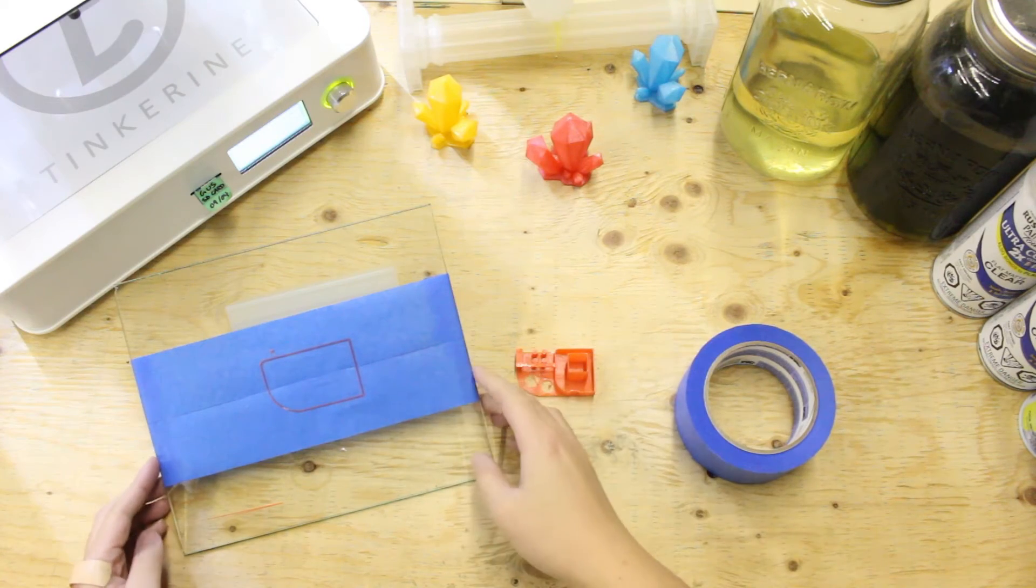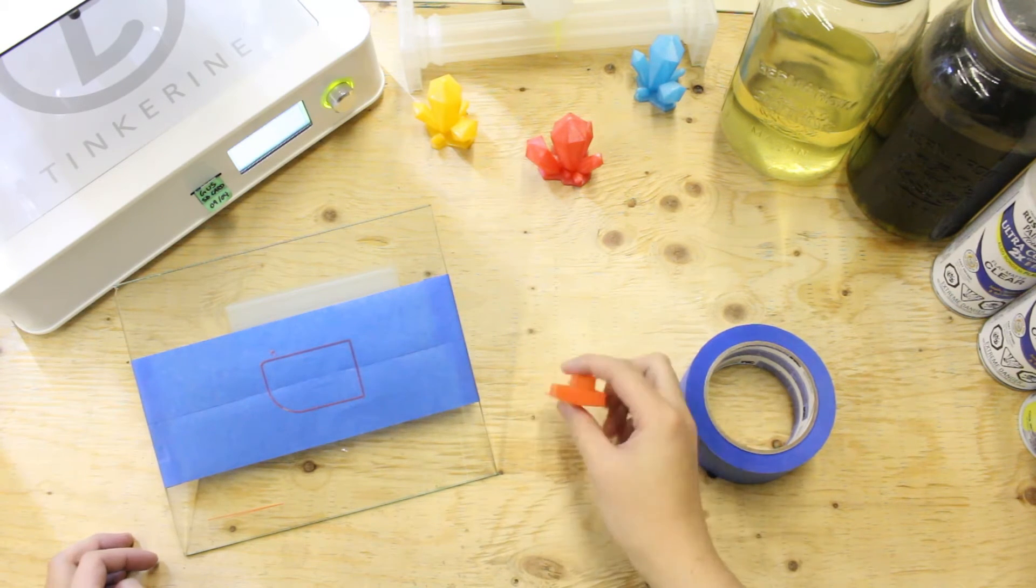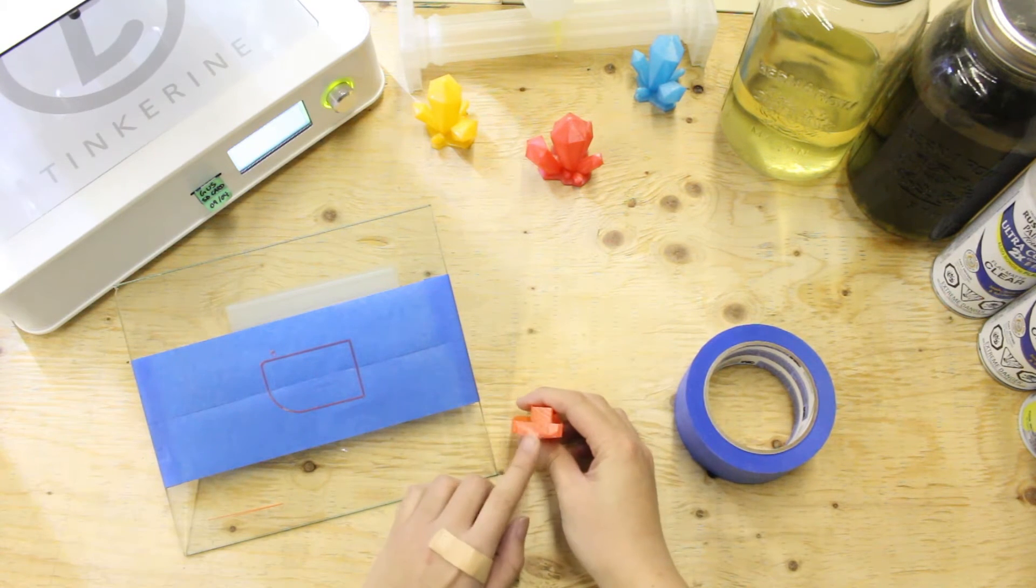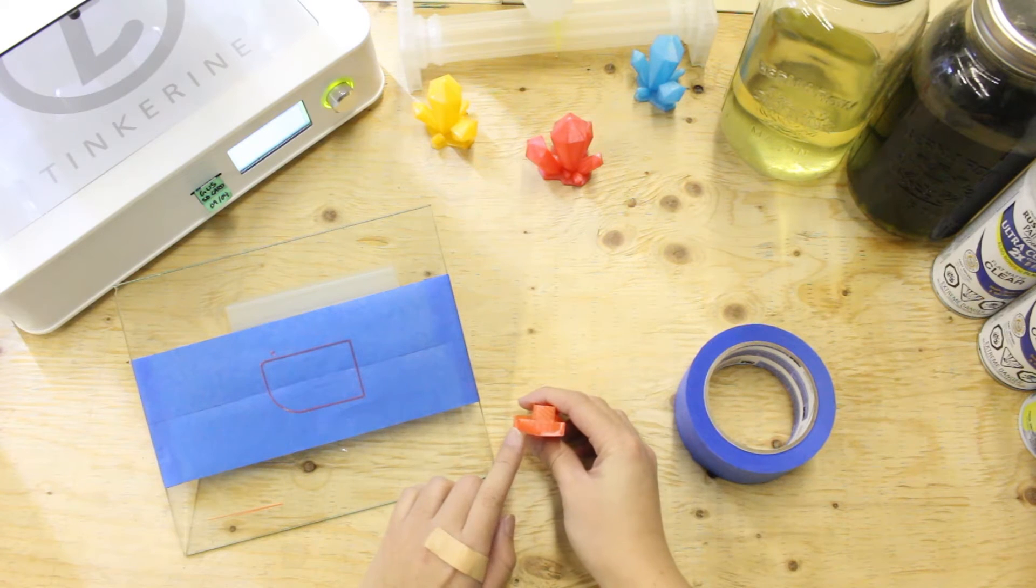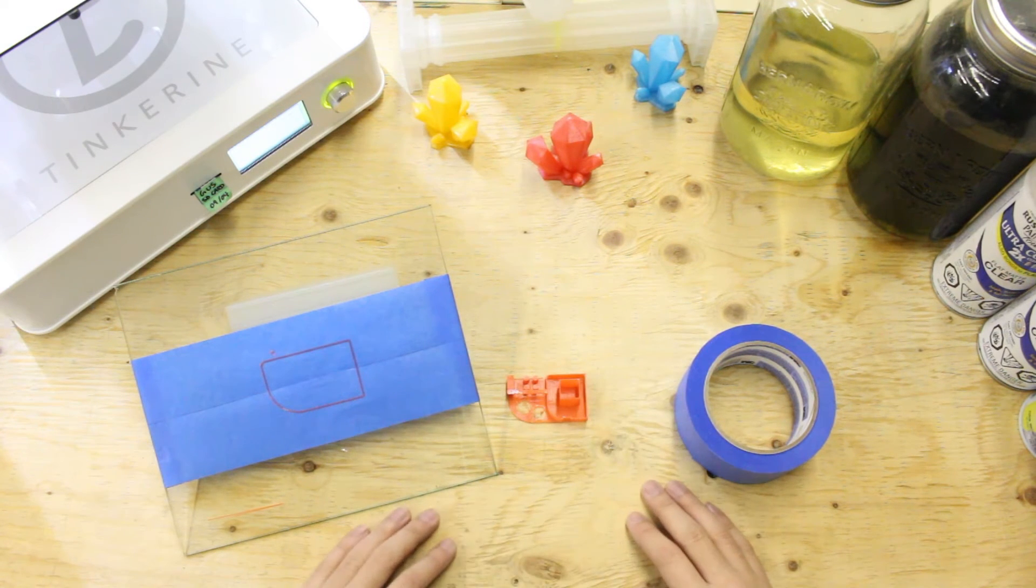Well there we have it. We tried using inverted blue tape as a bed adhesive and it works, but it's very finicky. I would not recommend doing this because using the other side of the tape is a lot simpler and it also guarantees a flat surface.